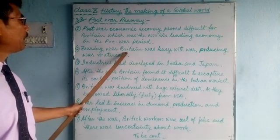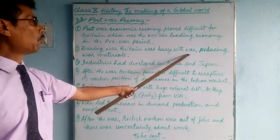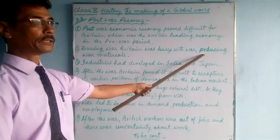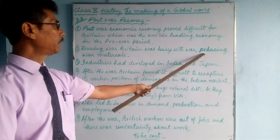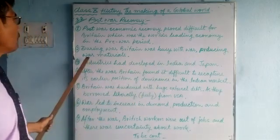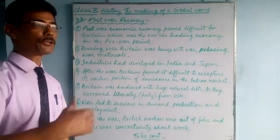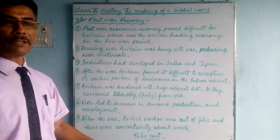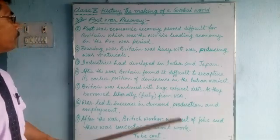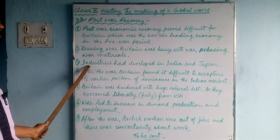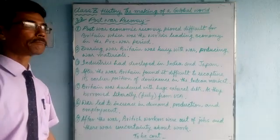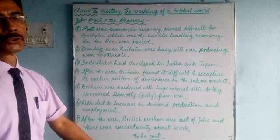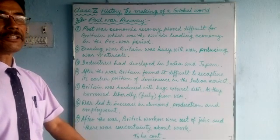Why was it so difficult? During the war, Britain was busy fighting, and in their home country, England, they were producing war materials — all kinds of machinery and weapons. Meanwhile, India and Japan were manufacturing clothes, boots, and war materials.